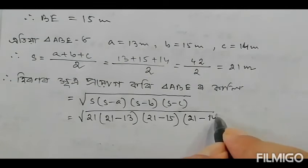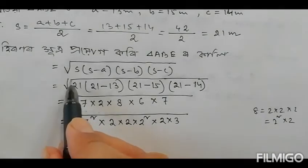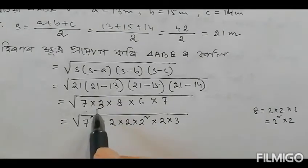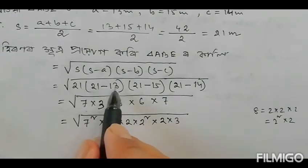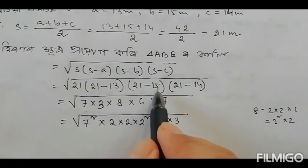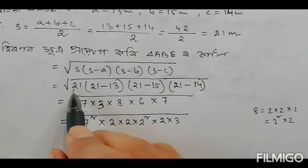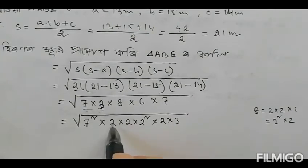Now applying Heron's formula: root over s into s-a into s-b into s-c. With s=21, s-a equals 21-13=8, s-b equals 21-15=6, and s-c equals 21-14=7. So we get root over 21 into 8 into 6 into 7, which gives area equal to 84 square meters.